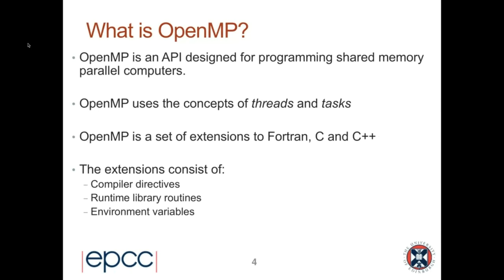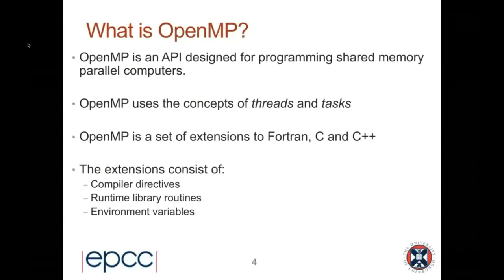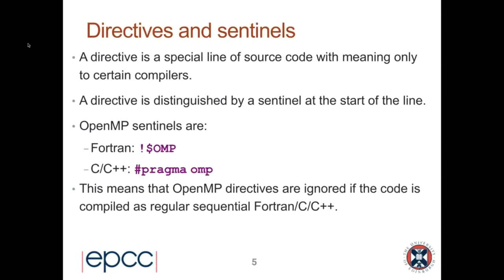What is OpenMP? It's an API designed for programming shared memory parallel computers, using the concepts of threads and tasks introduced in the previous session. OpenMP is a set of extensions to Fortran, C, and C++, consisting of three types of things: compiler directives (the most important), runtime library routines, and environment variables, all of which form part of the standard.